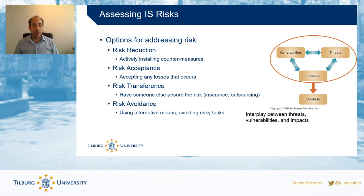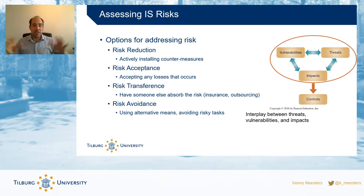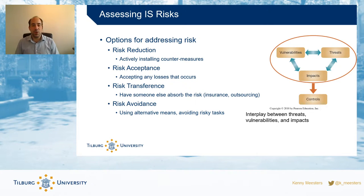Risk avoidance would be not taking the risk at all — not running your system, keeping it offline, not giving it to customers, or staying home and not using your car. To summarize the four options: risk reduction means you don't drive fast, reducing your vulnerability. Risk acceptance means you're okay with getting into an accident. Risk transference means getting insurance. Risk avoidance means not driving at all and staying home.